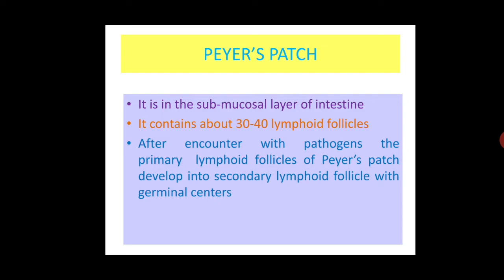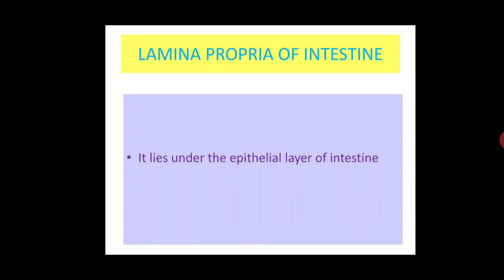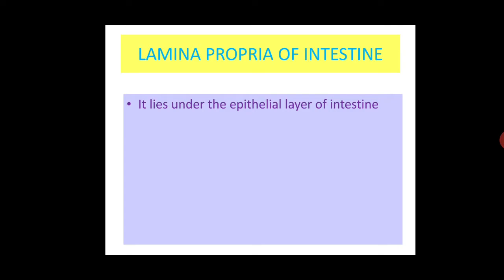After encountering pathogens, the primary lymphoid follicles of Peyer's patches develop into secondary lymphoid follicles with germinal centers. This is a diagram of Peyer's patches in which the dark yellow area is the submucosal region where the blue dots represent primary and secondary lymphoid follicles.